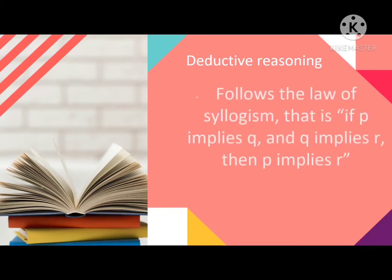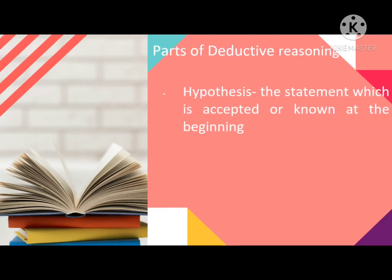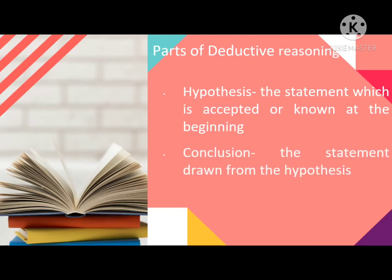Deductive reasoning follows the laws of syllogism — that is, if P implies Q and Q implies R, then P implies R. Parts of deductive reasoning include a hypothesis, which is the statement accepted or known at the beginning, and a conclusion, which is the statement drawn from the hypotheses.